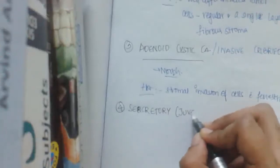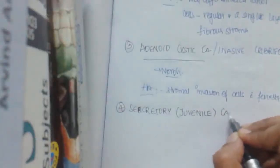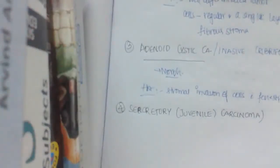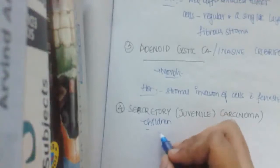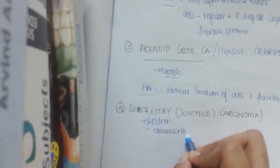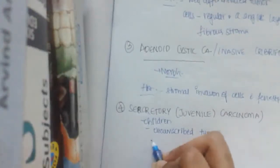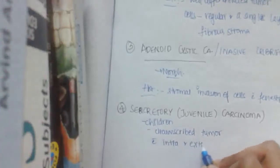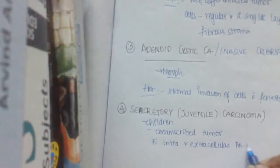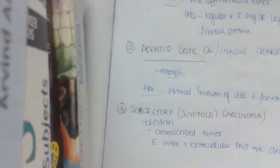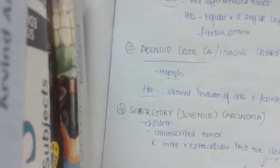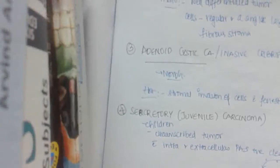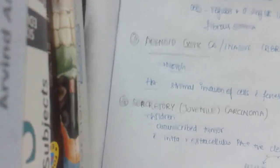The fourth one is secretory or juvenile carcinoma. So this is most commonly found in children, as the name says. It is juvenile in children and adolescents, and this is circumscribed tumor with intra and extracellular PAS positive clear spaces. This is because of secretory activity of tumor cells.